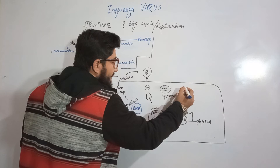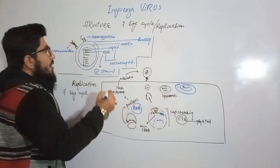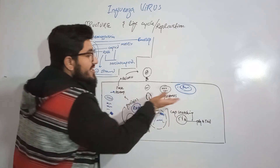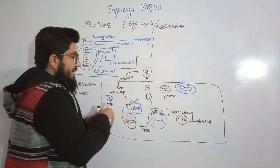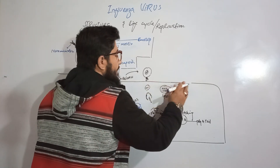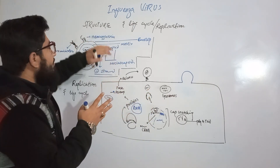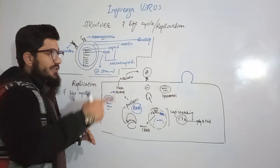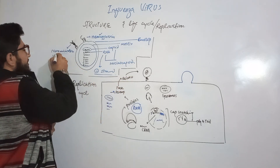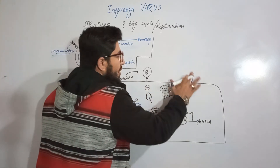Each new viral particle has eight RNA strands packaged inside the capsid, followed by the matrix protein. The envelope is taken from the host cell membrane as the virus begins moving outside. As the virus buds out, it acquires the host cell membrane as its envelope, and the surface proteins — hemagglutinin and neuraminidase — start appearing on the surface.